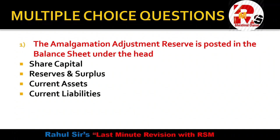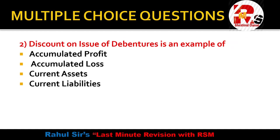Question number one: Amalgamation Adjustment Reserve is posted in the balance sheet under which head? In this chapter, for statutory reserves we pass a separate entry — Amalgamation Adjustment Account debit to Statutory Reserve. This Amalgamation Adjustment Reserve account is written under the heading of Reserves and Surplus, but it is deducted (shown as minus) under that heading.